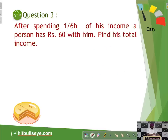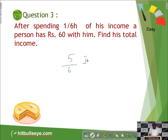After spending 1 by 6 of his income, a person has Rs. 60 with him — find the total income. This is a question based on the remainder of fractions. If someone spends 1 by 6 of their income, what is left is simply 5 by 6, because 1 minus 1 by 6 is 5 by 6. So 5 by 6 of the income equals 60, and income comes out to be 72. So if one spends 3 fourths, he is left with 1 fourth; if one spends 2 thirds, he is left with 1 third, and so on.